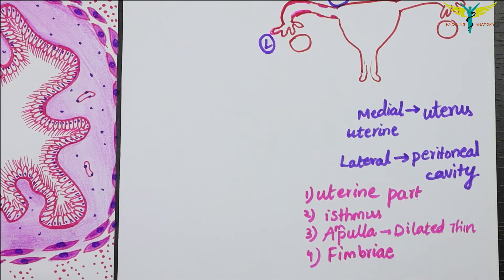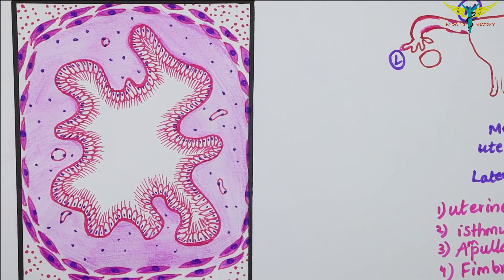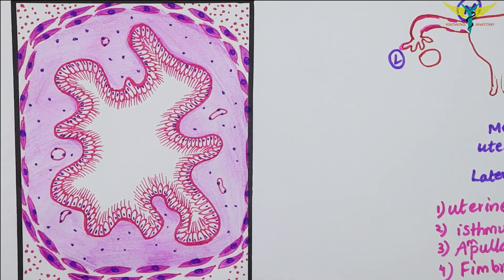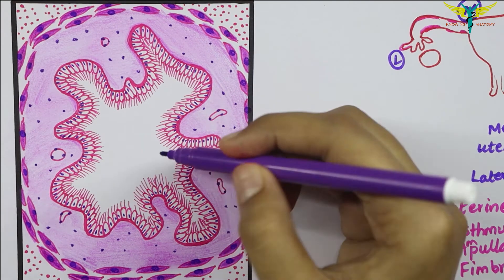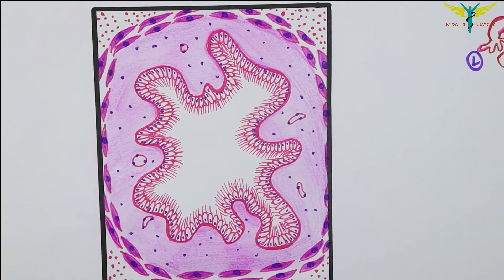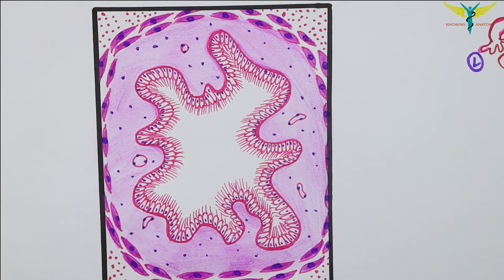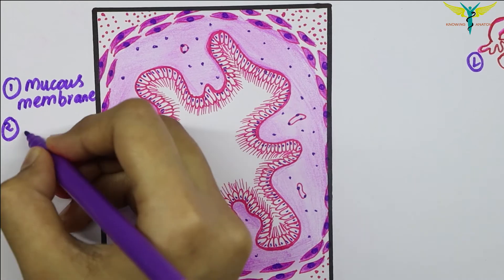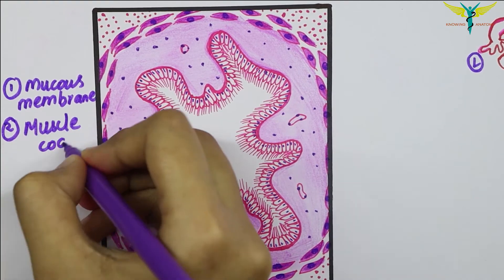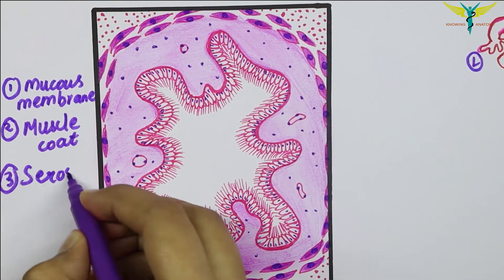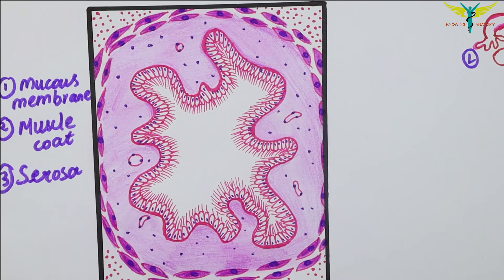Now let's learn about the proper histology of the uterine tube. The wall of the uterine tube consists of three layers from inside to outside: the first layer is the mucous membrane, the second layer is the muscle coat, and the third layer is the serosa.